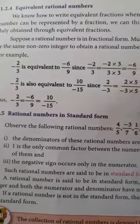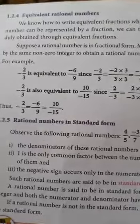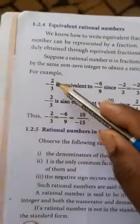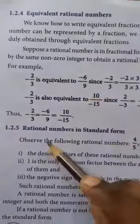Then we get the rational numbers. Now, see minus 2 by 3 is equivalent to 6 by 9. How?